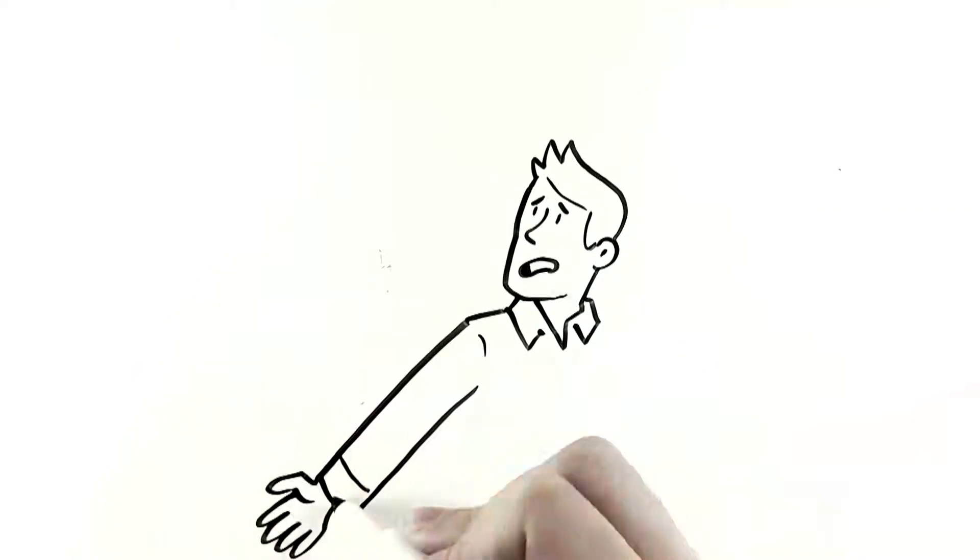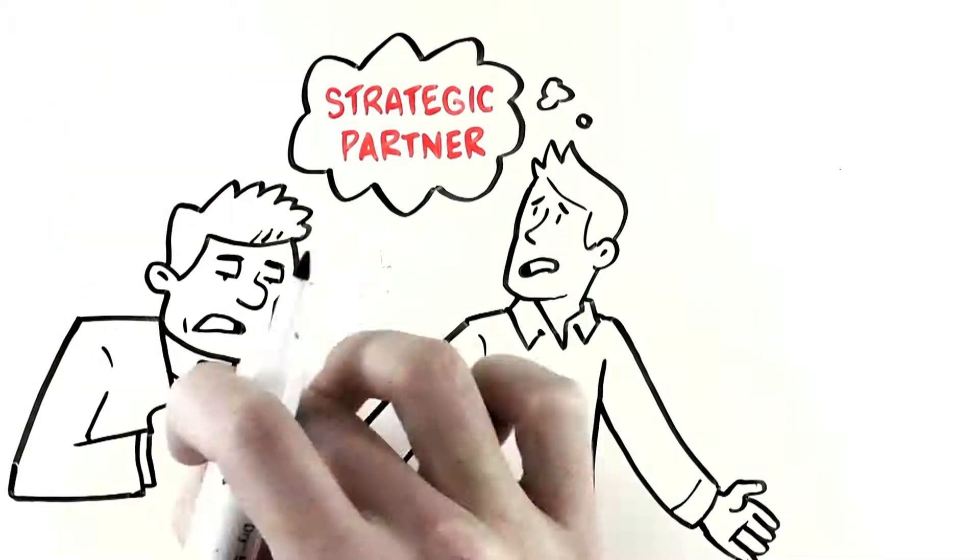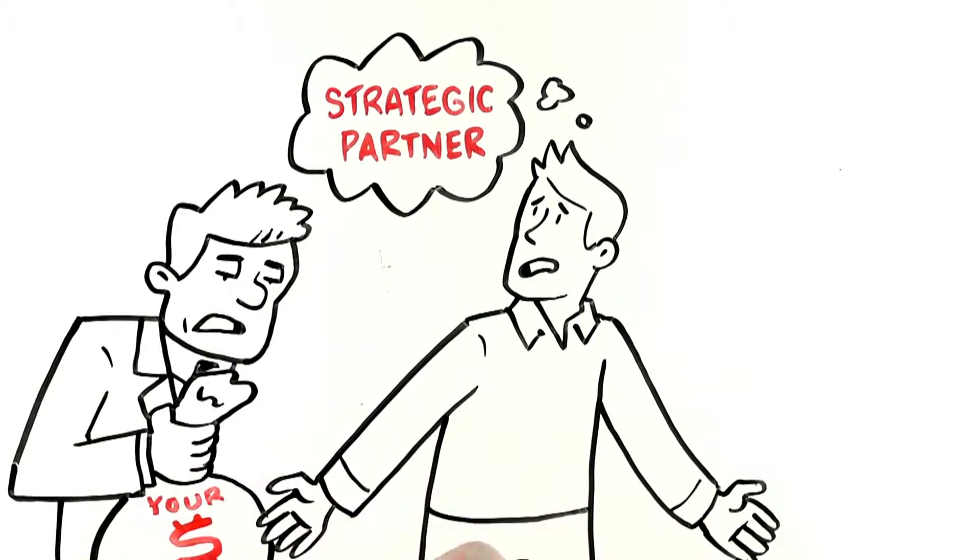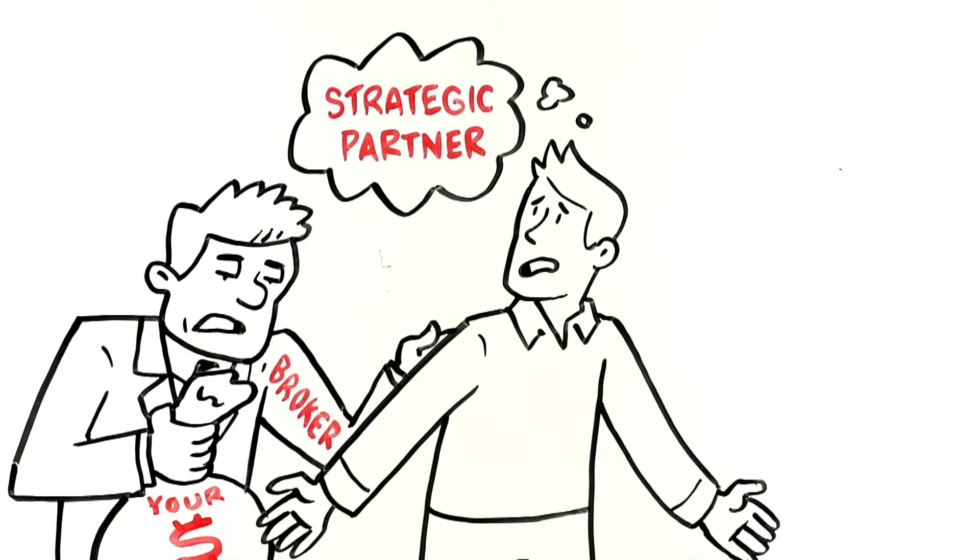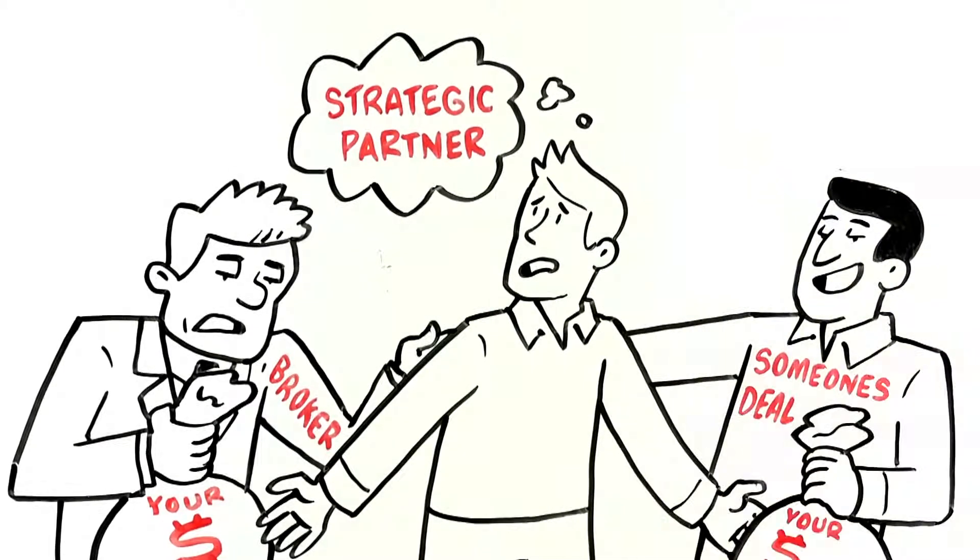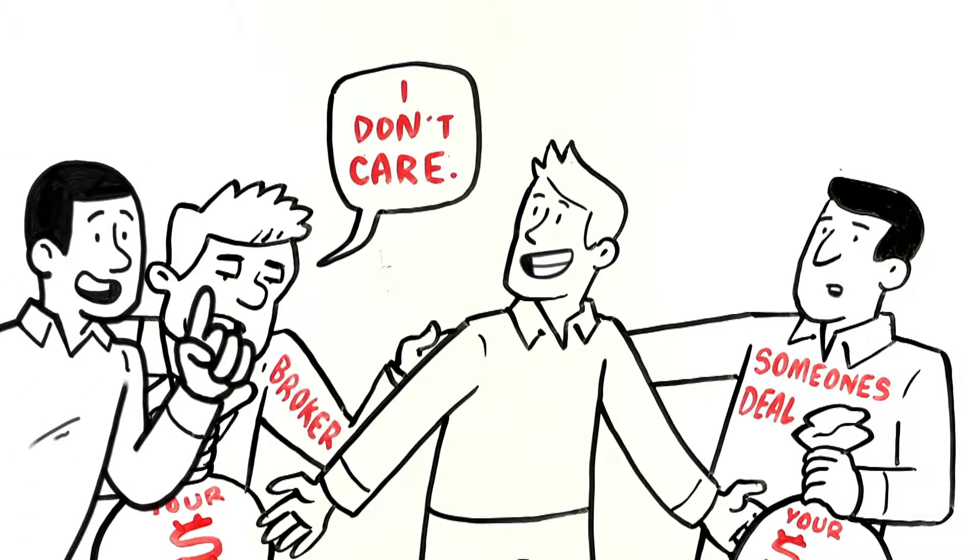That's when Tom realized he needed a strategic partner to help him invest in two-dimensional investments. From experience, Tom knows that most people out there putting money into deals on your behalf are brokers. They make money by handing you off to someone else's deal. They don't care what happens after that. And that's when Sam told him about Boron Capital Group.